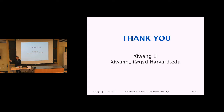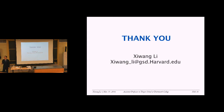Q&A: A student asked about the scale of the microgrid project discussed earlier. The speaker clarified it was a small military microgrid — about five to ten small tents with two or three electric vehicles and a lighting system, not integrated with real buildings. It was a mobile deployment scenario.